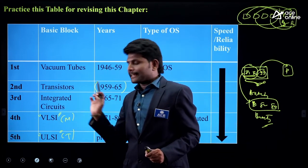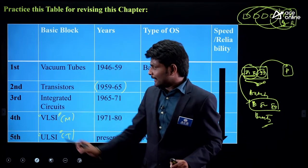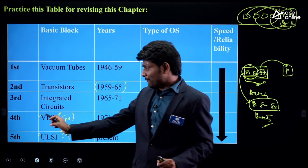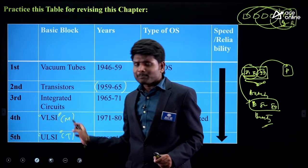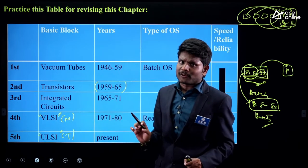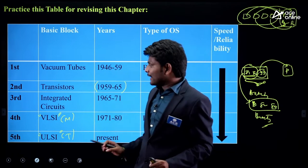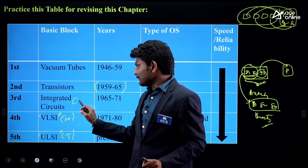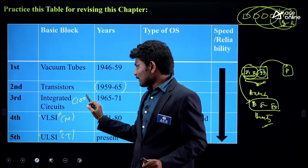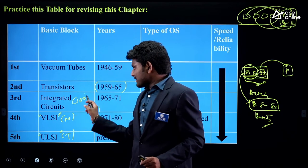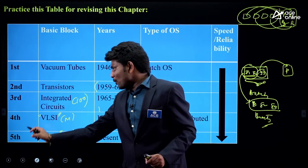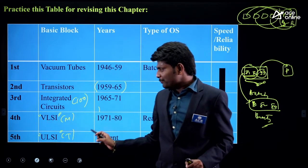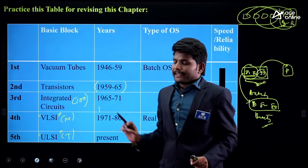In the 3rd generation, integrated circuits were there. In the 4th generation, integrated circuits were there. In the 5th generation, integrated circuits were there. But where they differ: in 3rd generation, integrated circuits are in hundreds; in the 4th, millions; in the 5th, trillions.